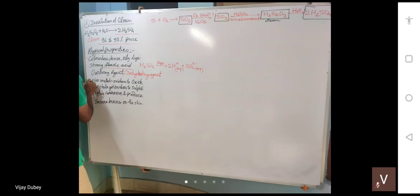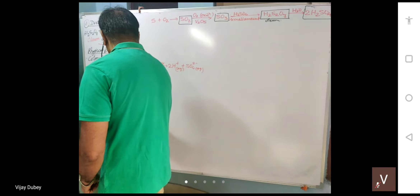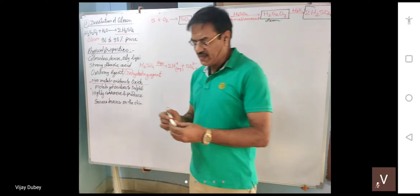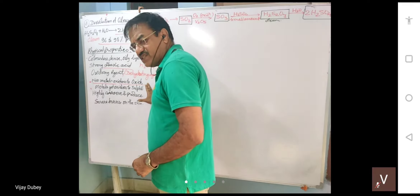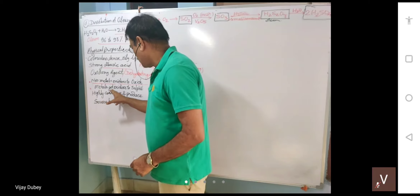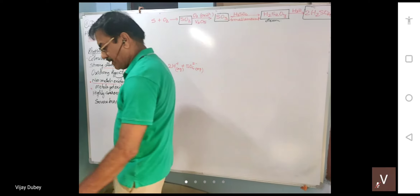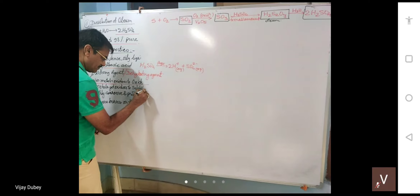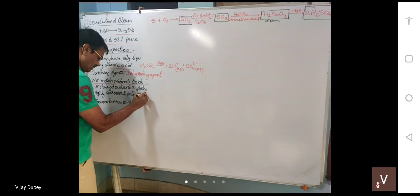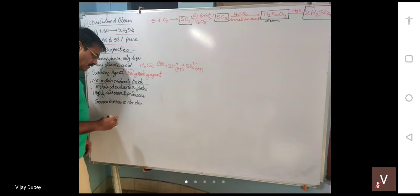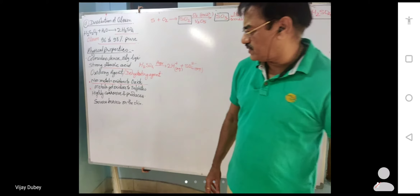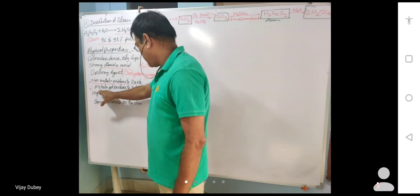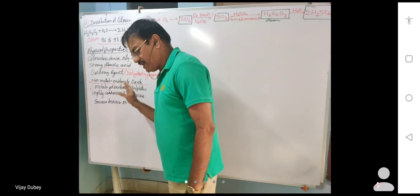On reaction with non-metals, sulfuric acid oxidizes them into their corresponding oxides — for example, carbon becomes carbon dioxide and sulfur becomes sulfur dioxide. When it reacts with metals, it converts them into their corresponding sulfates.